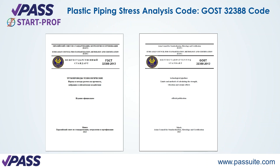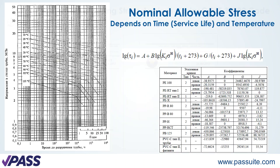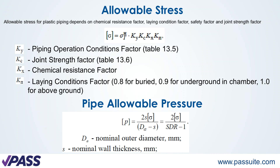The analysis is done according to the Russian GOST code for process piping, which includes a special paragraph about plastic piping stress analysis. The allowable stress for plastic material depends on service life and temperature. Here you can see the special equation that is used to determine the allowable stress.